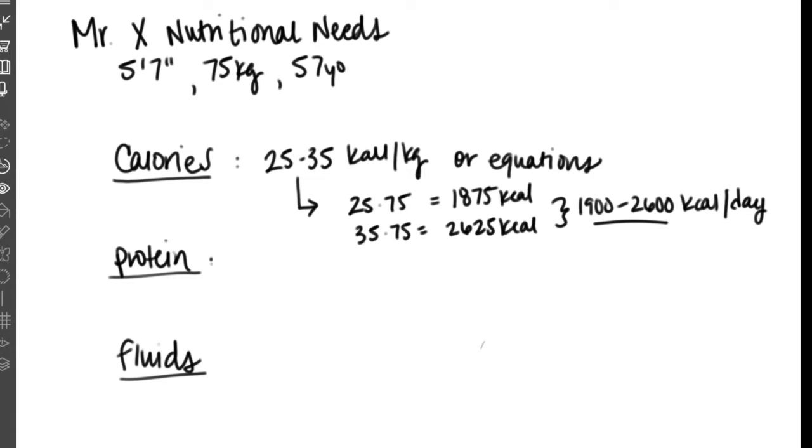After we get our calorie range, we can move on to his protein needs. Currently oncology research recommends between one and 1.5 grams per kilogram of protein. That can always change based on a multitude of factors. Sometimes patients need more protein if they have wounds, if they're on dialysis, or if they're critically ill. But for right now, Mr. X can start with one to 1.5 grams per kilogram a day. If we multiply that by his weight of 75 kilograms, that gives us a range of 75 to about 110 grams a day.